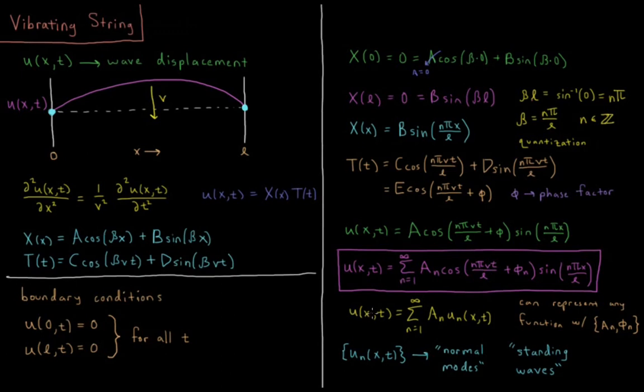So this is also equal to u of x t equals sum from n equals one to infinity of u n x t. These u sub n's here are these individual solutions of n and they're what we would call normal modes. Any solution of this equation can be decomposed in terms of these individual normal mode solutions.